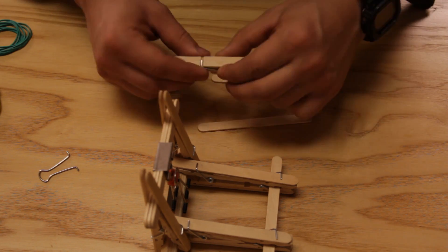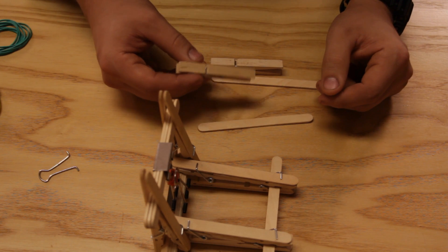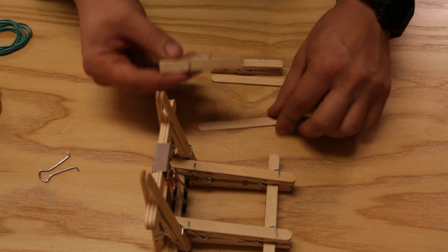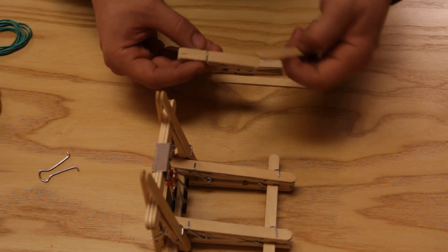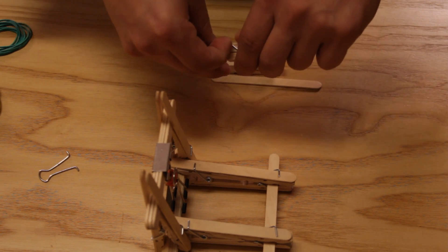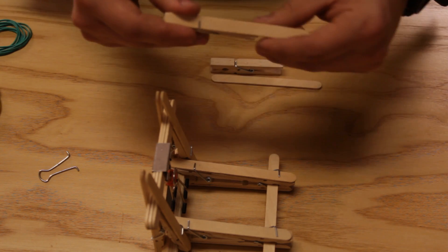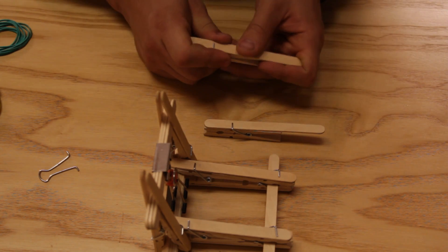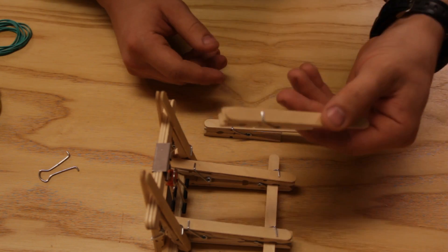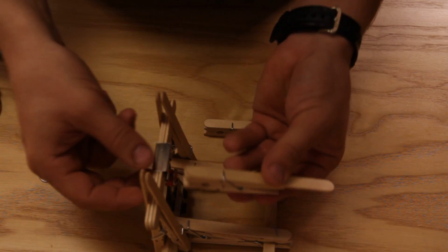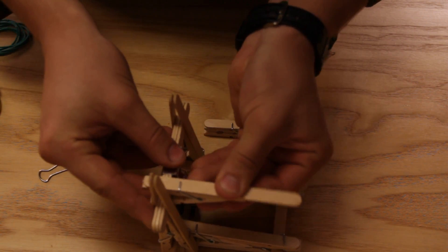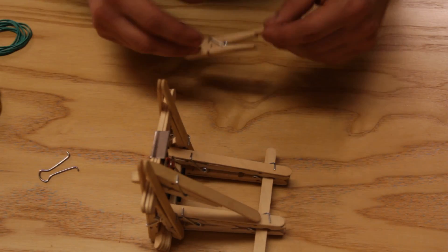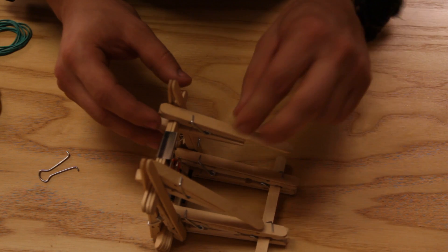After that, the next step is to take and make some support arms. The support arms are going to go from here to here. To do so you need one clothespin and one popsicle stick. Repeat with the other side. When you have these, you're going to attach them to the top and angle downwards like so.